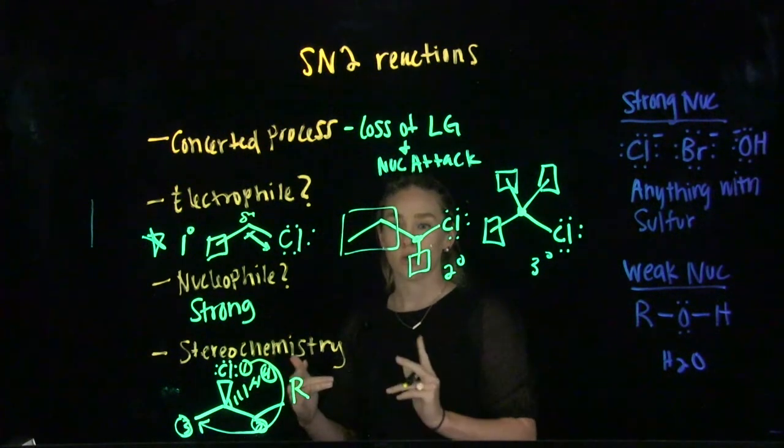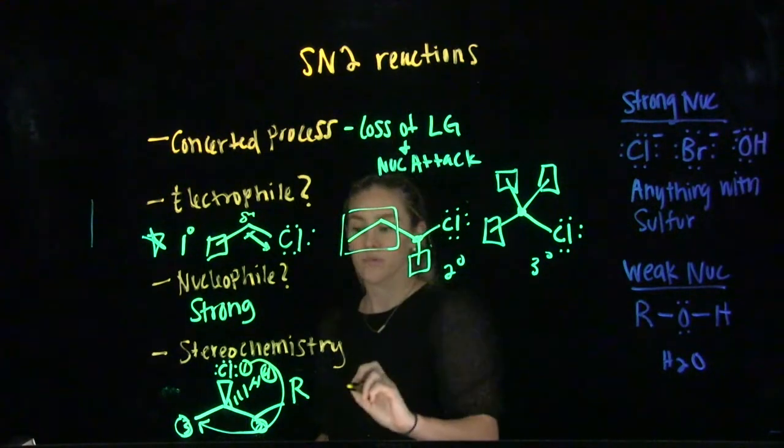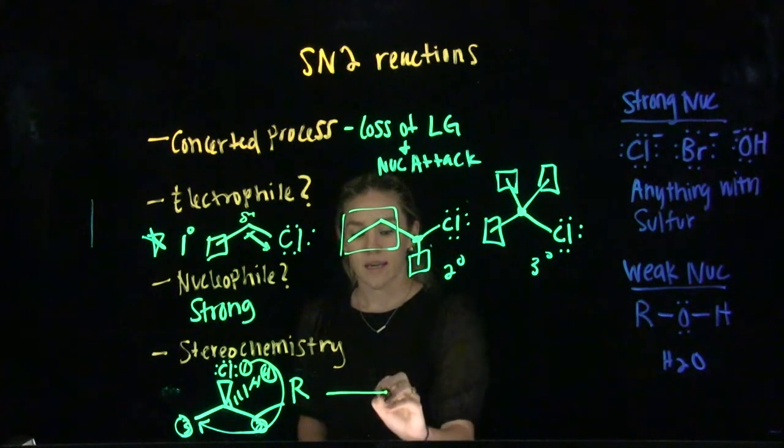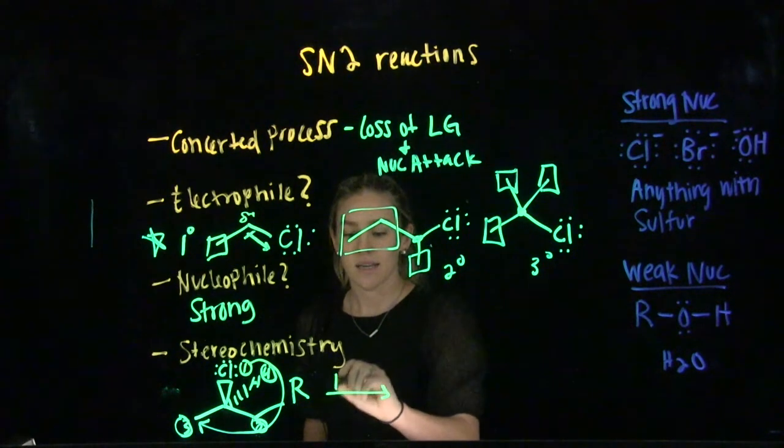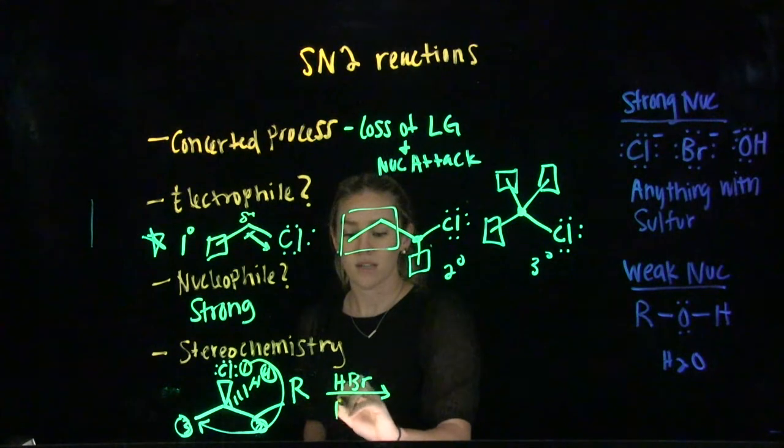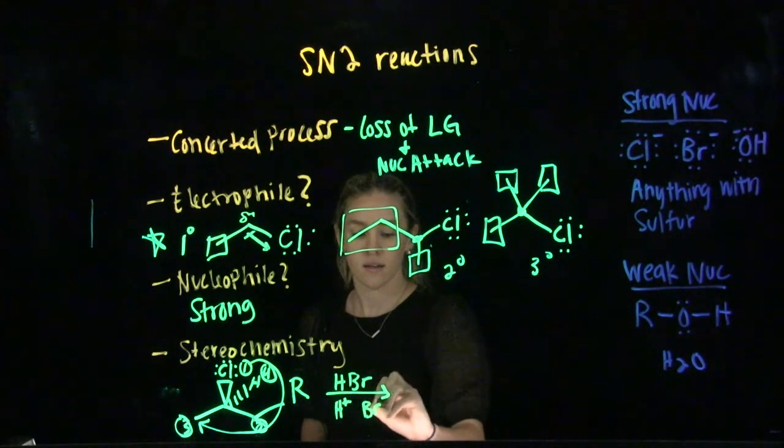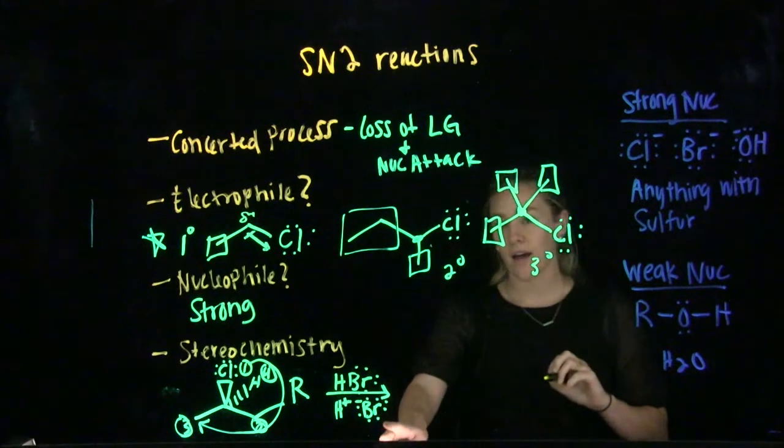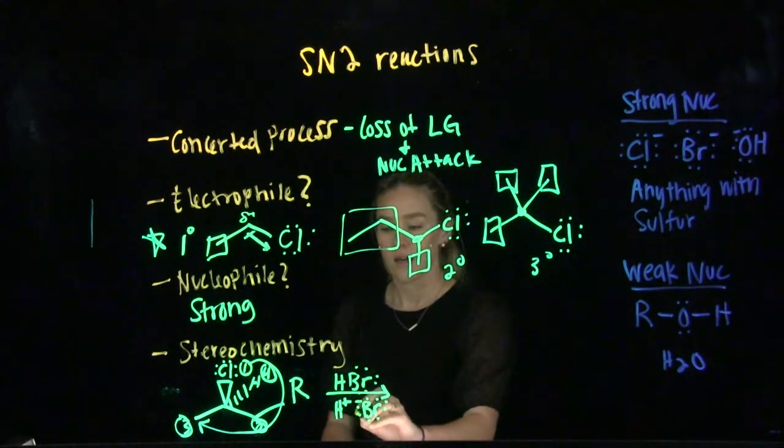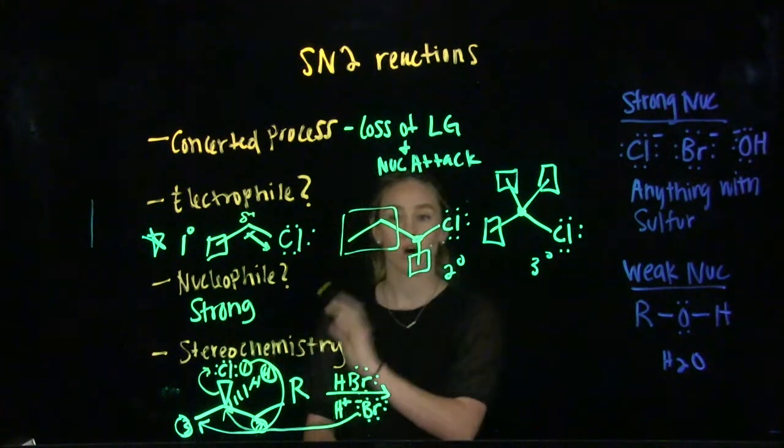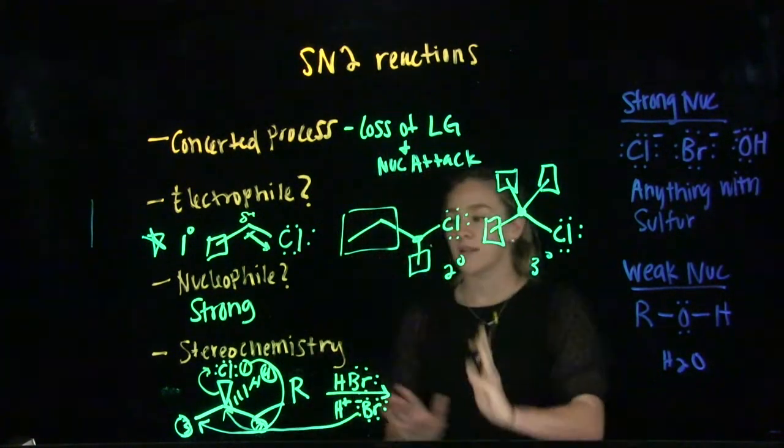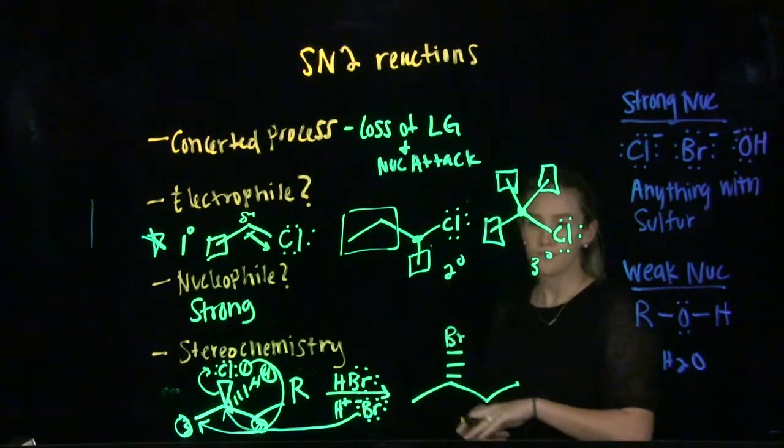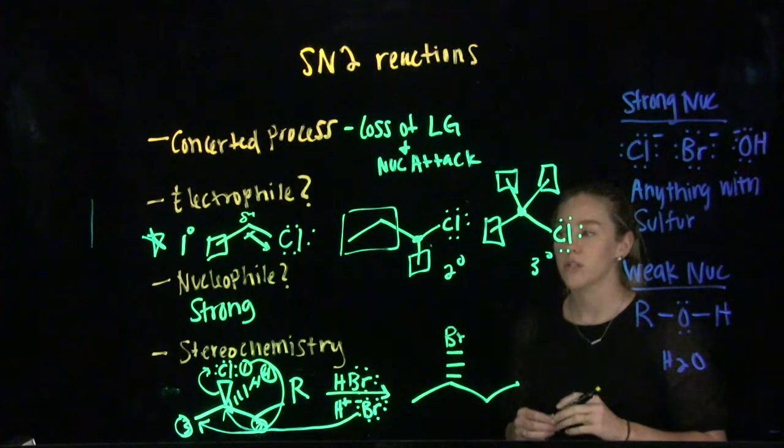What that means is after we do a substitution reaction through the SN2 mechanism, our stereochemistry is going to flip. Our answer will have S stereochemistry. So if we're reacting it with a strong nucleophile, such as HBr, which would break up into H+ and Br-, that means this bromide ion is our nucleophile. It would attack, kick out the leaving group. What I want you to get from this is that your answer is going to have opposite stereochemistry.